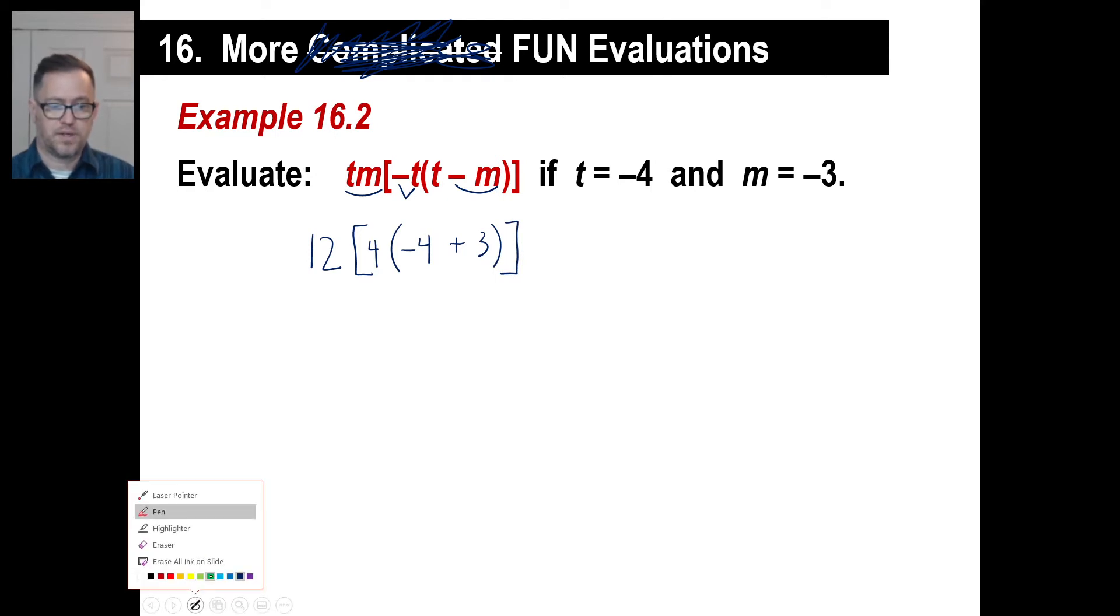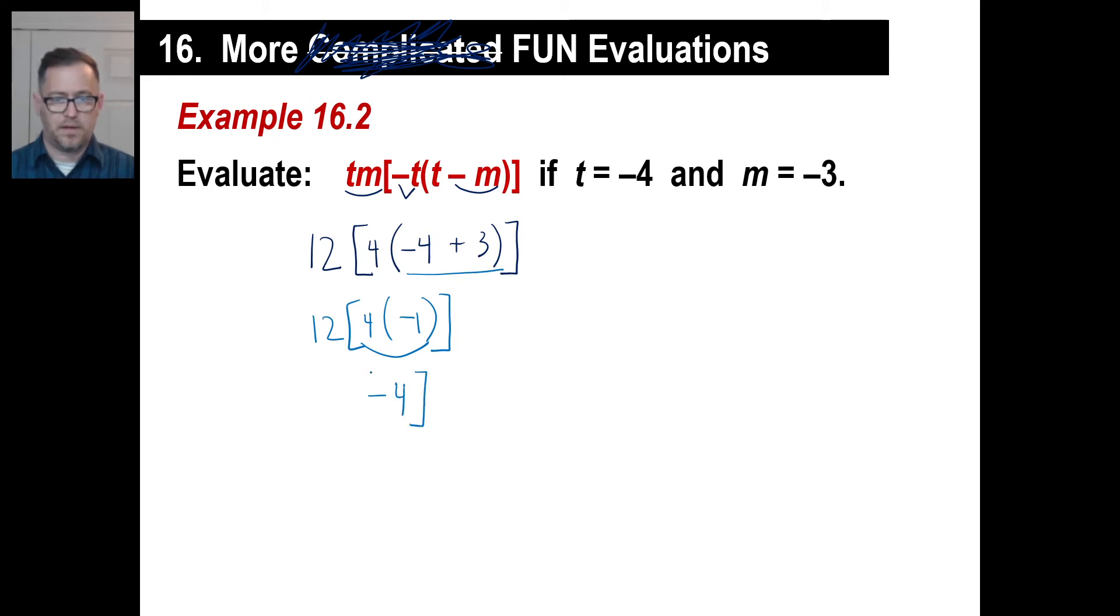Let's take a look at the inside and work our way out again. Let's take this part here. I'm going to copy down 12 again, the bracket again, the 4 again, and I'm going to do this part. Negative 4 plus 3 is negative 1. Working our way out again, 4 times negative 1 gives you negative 4. That's what's going to be the final number inside the bracket. And 12 times negative 4 is negative 48. And there we go.